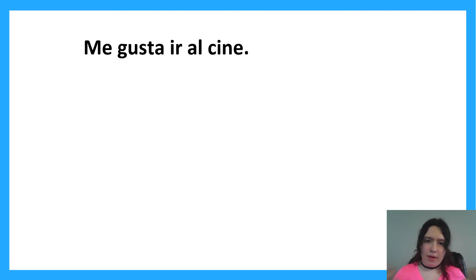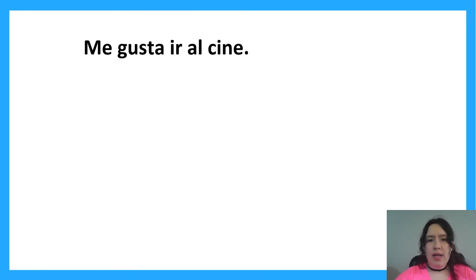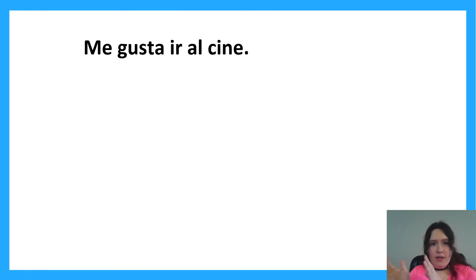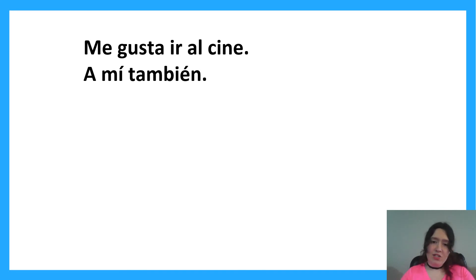What do you do when someone says they like something and you want to say 'me too'? A common mistake is saying 'yo también.' But we're not using 'yo' here. Think of it as 'going to the movies is pleasing to me too.' So you have to say 'a mí también,' meaning 'to me too.' The better, natural translation is just 'me too' — 'a mí también.'